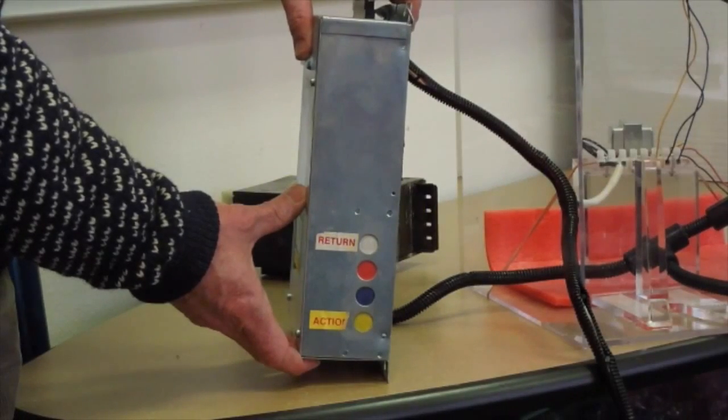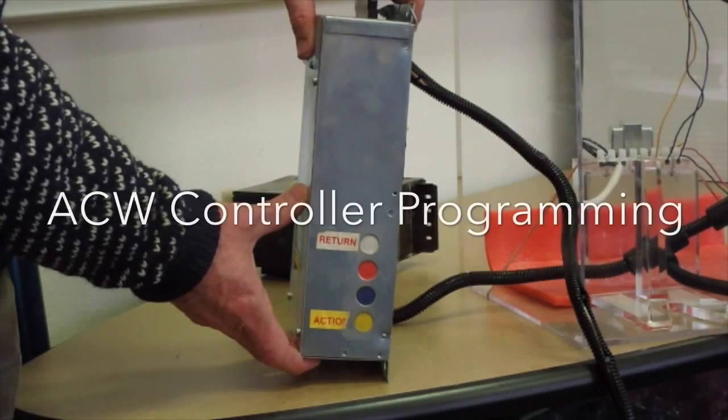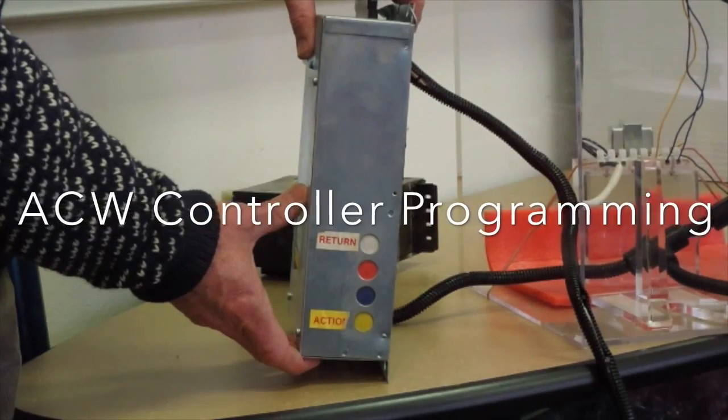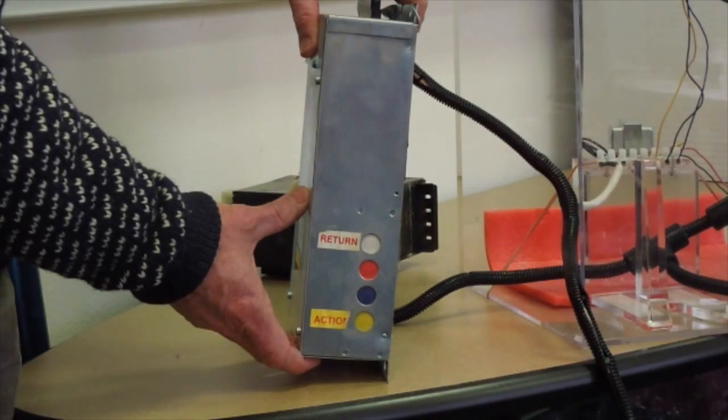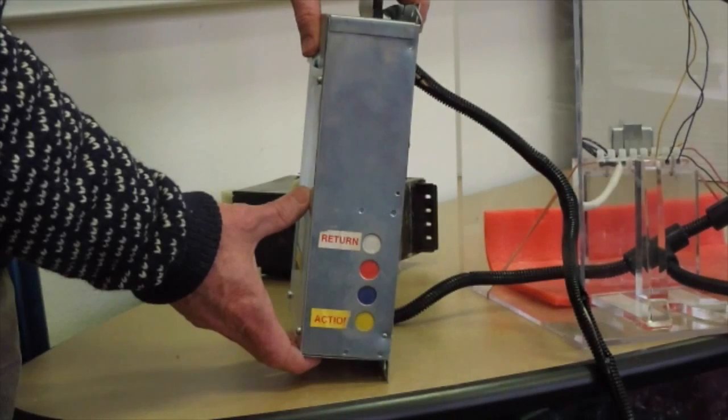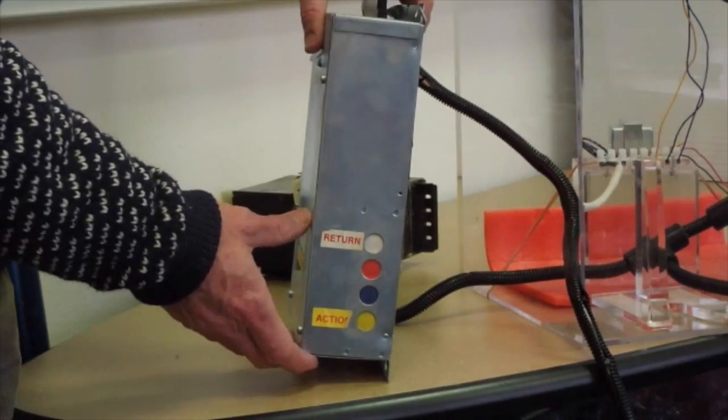In the previous step, we installed the red scrolling display. Now we're going to plug your controller back into the ACW by plugging it into two black edge connectors and applying power to it.